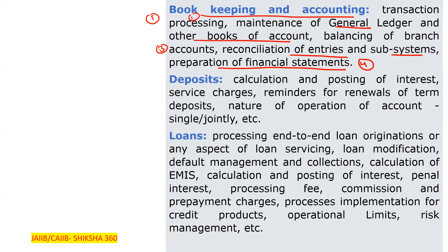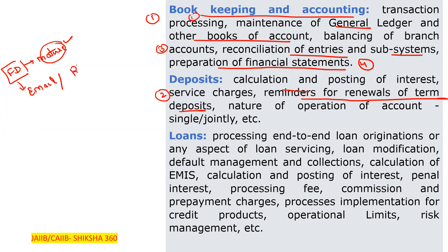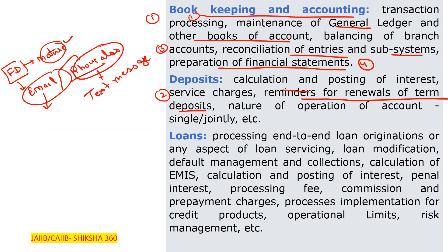The second back office function is deposits, which includes calculation and posting of interest, service charges, reminders for renewal of term deposits like FDs — for example, you will get information that your FD is going to mature on a particular day via email or text message. It also covers the nature of operation of the account, whether it is joint or single, and application of nominee details.